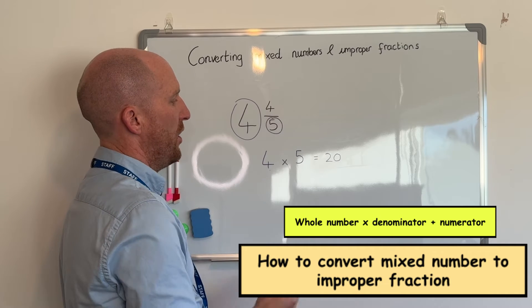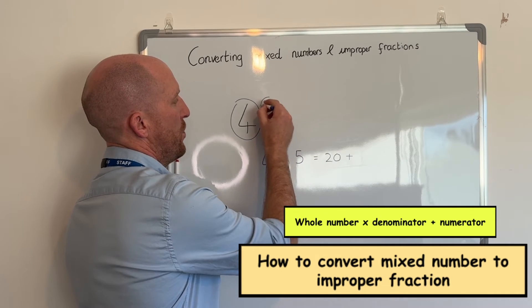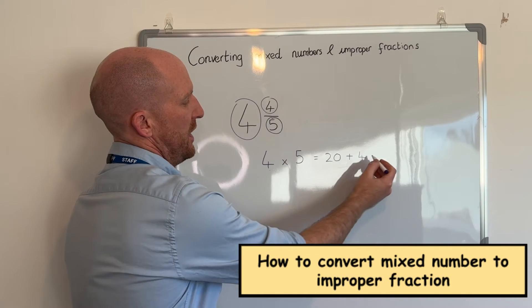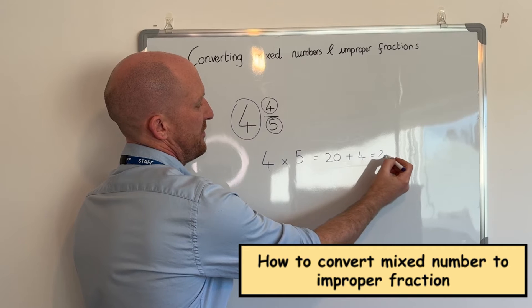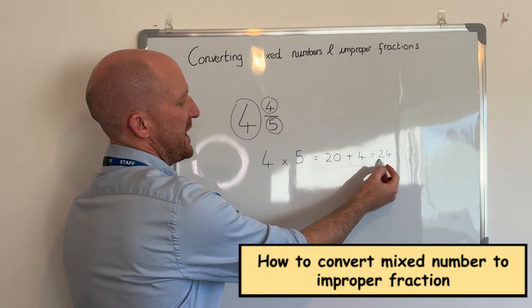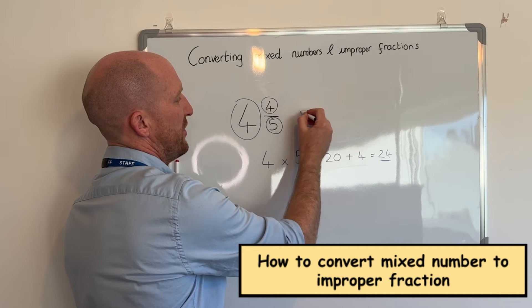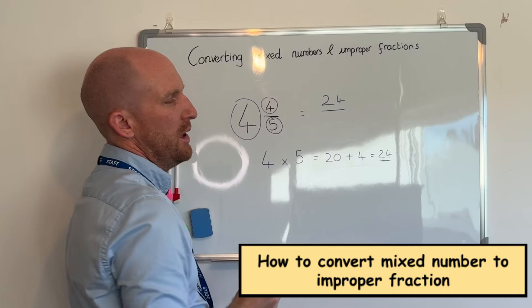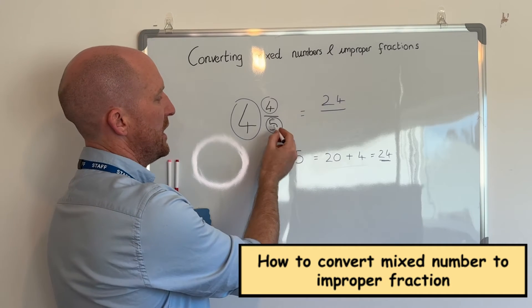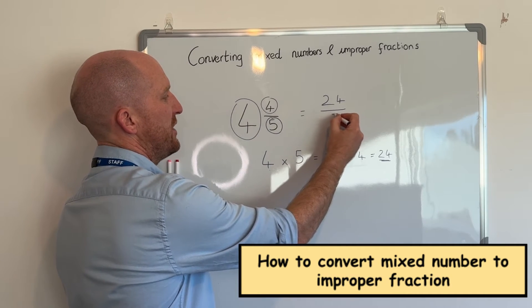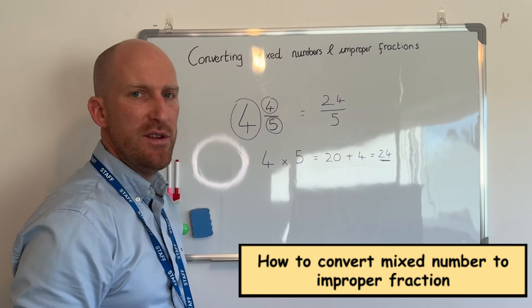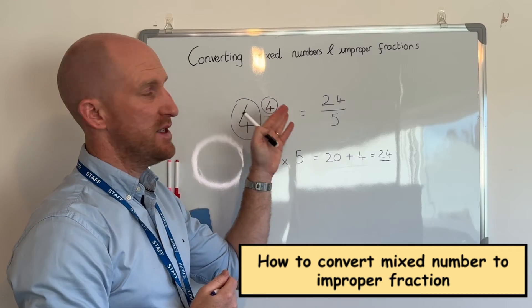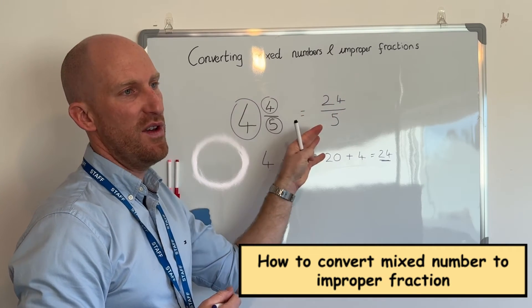And then all you have to do is add whatever the numerator is. So the numerator is four. And that makes twenty-four. So we take the answer which is twenty-four, and then all we need to do is take the denominator which was five and shift it over. So four wholes and four fifths is the same as twenty-four fifths.